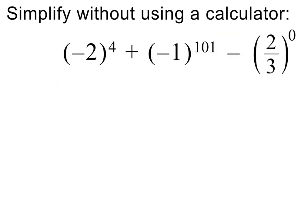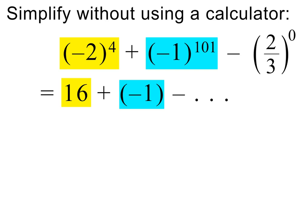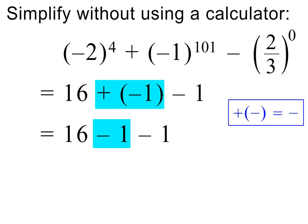Here is the next example — please pause to study it. Minus 2 all to the power of 4 is equal to 16; this is a positive answer because the exponent is even. Minus 1 all to the power of 101 is equal to minus 1, because the exponent is odd, and because this answer is negative we write it inside brackets. And 2 over 3 all to the power of 0 is equal to 1, because any number to the power of 0 is equal to 1. A plus with a minus in brackets next to it is just minus, so the final answer is 14.